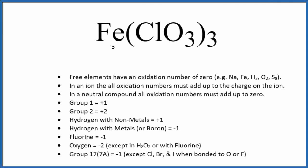Let's figure out the oxidation number for the Fe in Fe(ClO₃)₃. This is iron(III) chlorate, and that iron 3 should give you a clue to the oxidation state for the iron here.